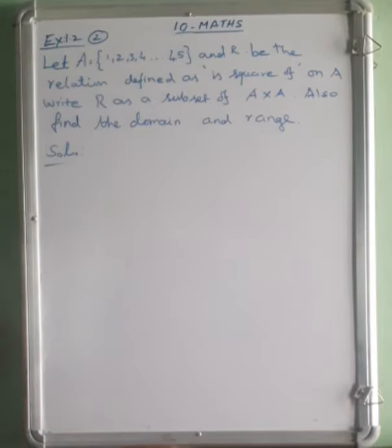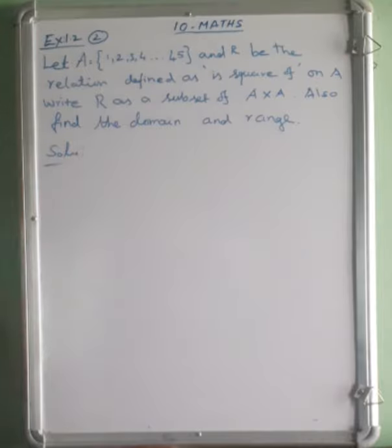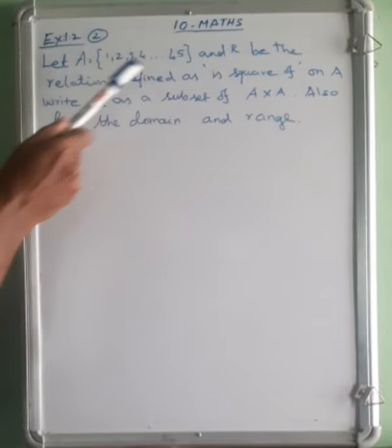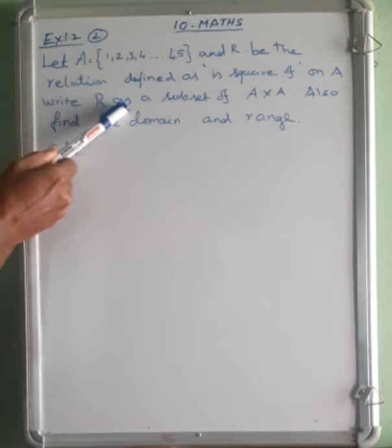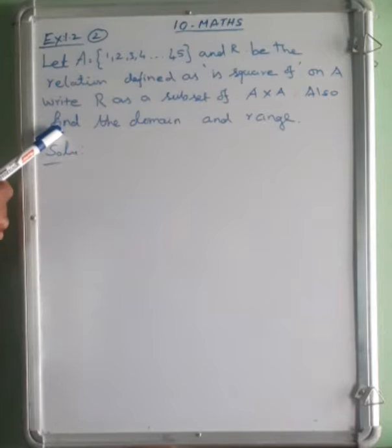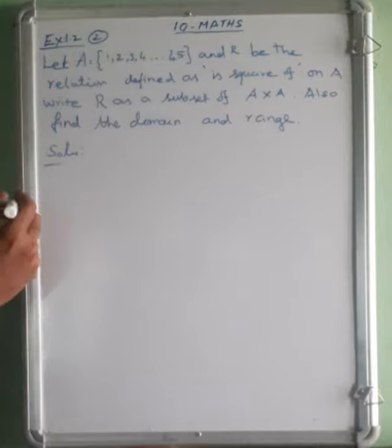Hello students, 10th Maths Exercise 1.2 second sum question. Let A is equal to 1, 2, 3, 4, etc., 45, and R be the relation defined as is square of on A. Write R as a subset of A cross A. Also find the domain and range.